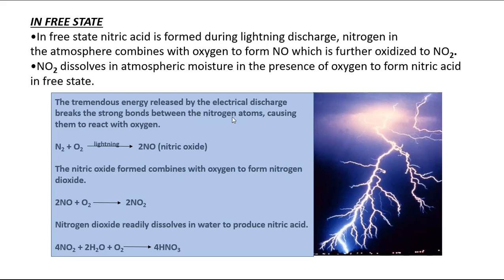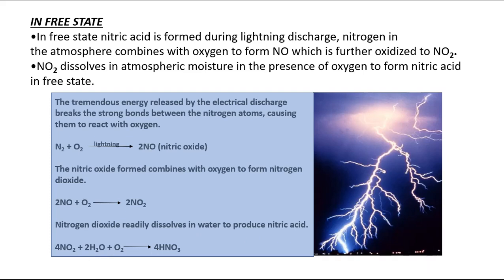In a molecule of nitrogen, there are two atoms of nitrogen with a triple bond between them. A lot of energy is required to break this bond, causing them to react with oxygen. Thus nitrogen combines with oxygen during lightning to form nitric oxide. Nitric oxide further gets oxidized to nitrogen dioxide, which readily dissolves in water and combines with oxygen to form nitric acid. Thus nitric acid is formed during lightning discharge.